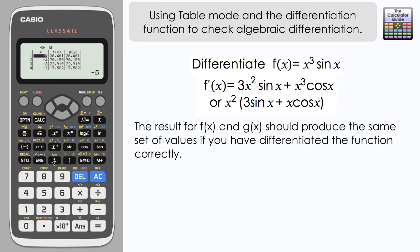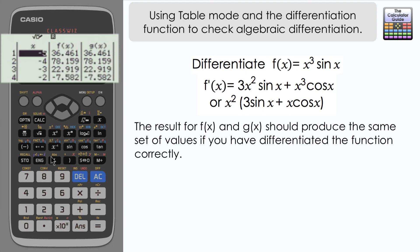Now what you'll notice is that for f(x) and g(x), we've actually got the same numerical values. And if I scroll down, let's just check that that's the case for all our values from -5 through to x equals 5. Yes, it is.